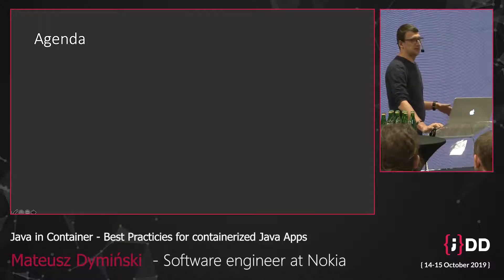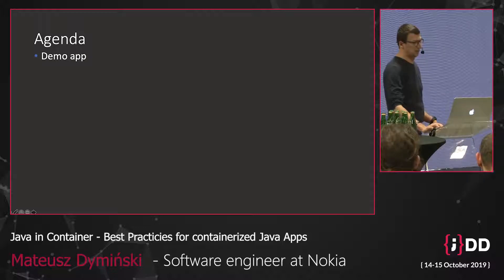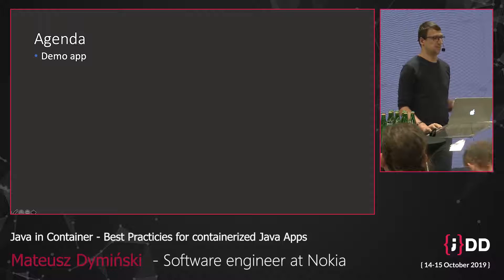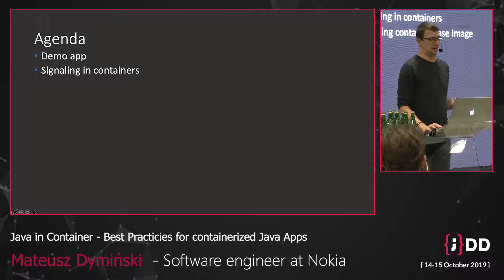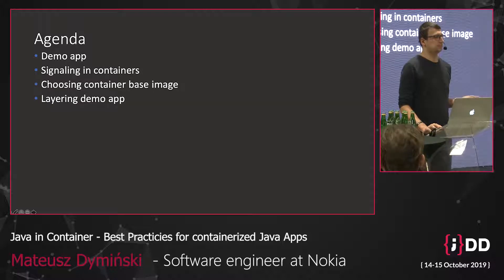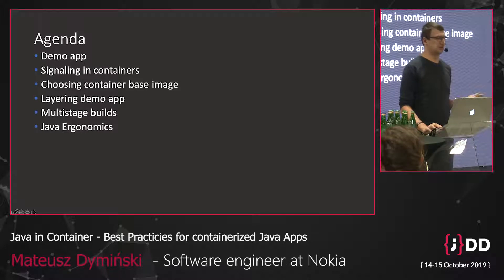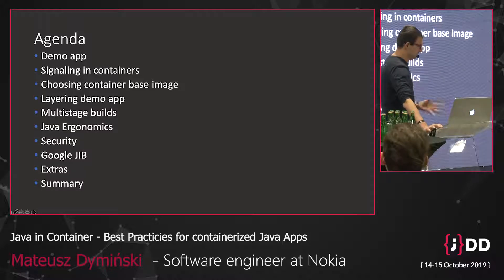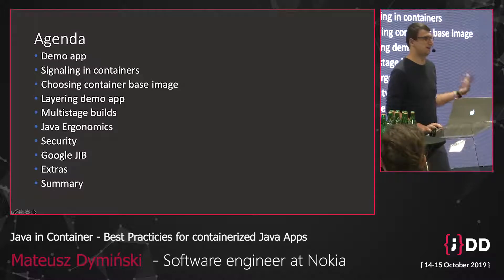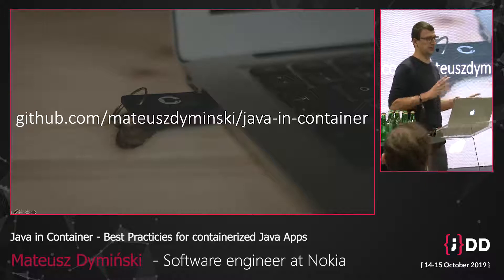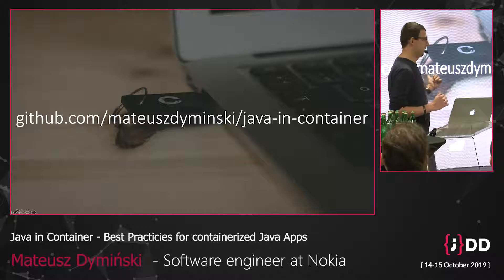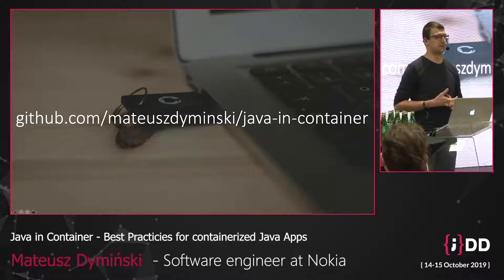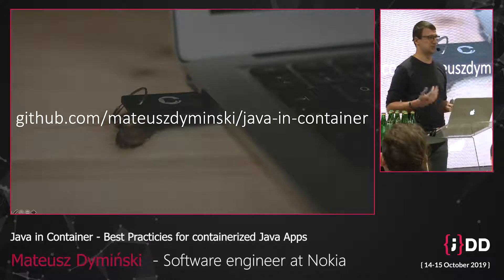I've split the whole presentation into ten parts. At the very beginning we are going to talk about applications — we need to containerize something. Then step by step: signaling, choosing the best container, how to split our jar into layers, multi-stage builds, Java ergonomics, security, Google Jib, some extras, and of course a summary. All the code snippets, presentations, even images — everything is already committed and available. You can find PPTX presentations as well as the code there.